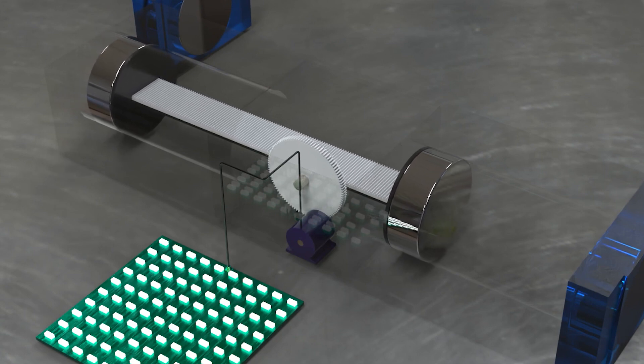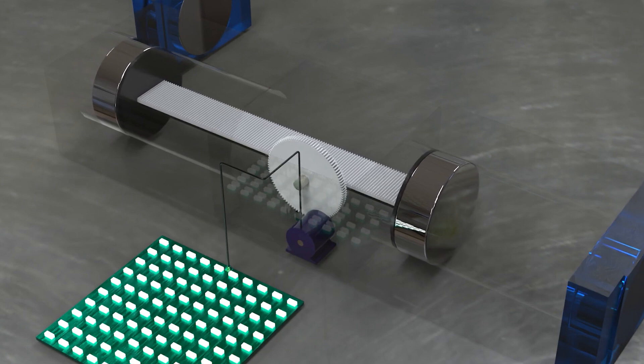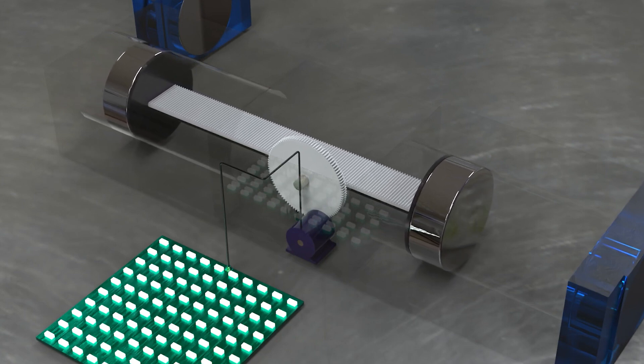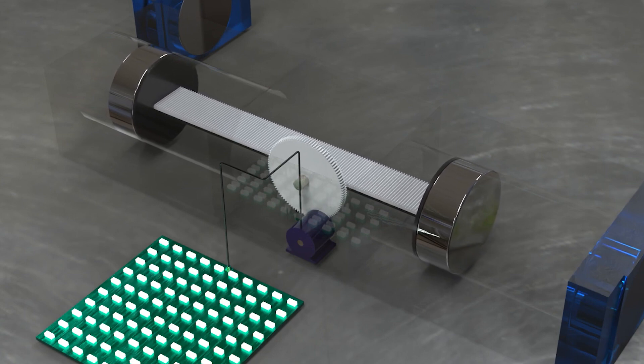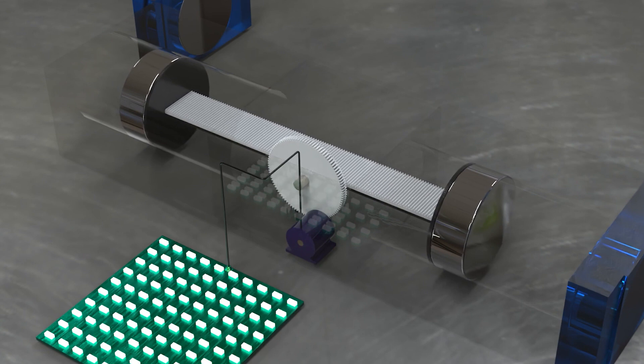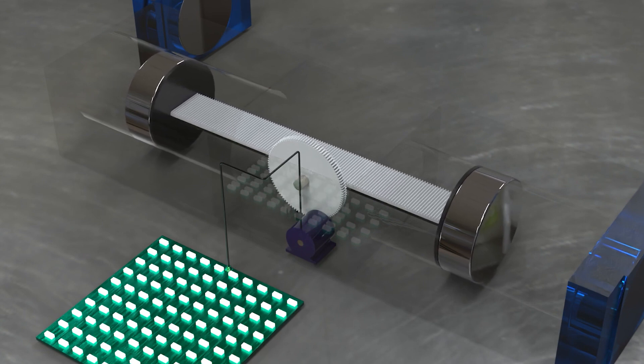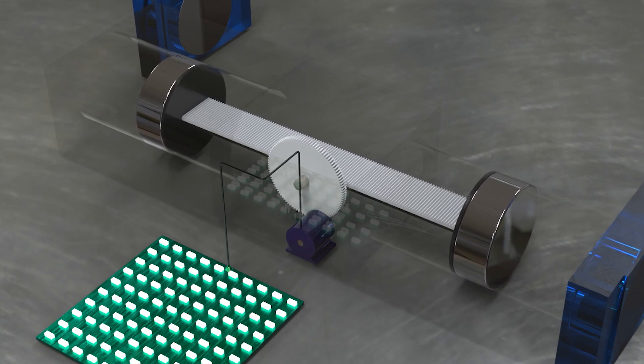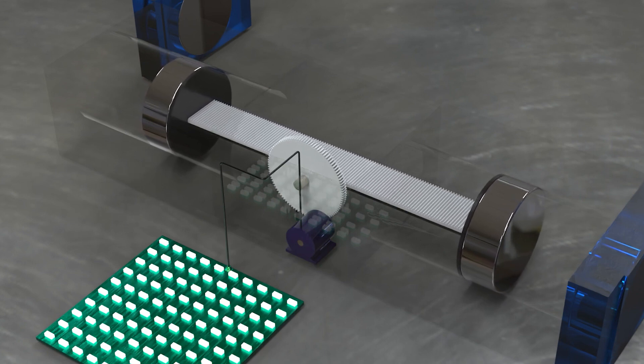The continuous cycle described can be repeated indefinitely, creating a self-sustaining process. Ultimately, the central shaft, which is connected to a generator, converts the rotational energy into electrical energy. This groundbreaking magnetic system represents a significant advancement in the field of energy generation.